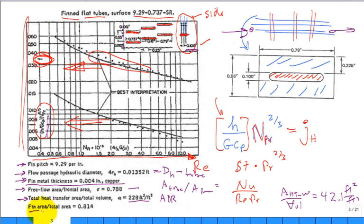The fin area to total area ratio is 81.4% — meaning 81.4% of the air-side surface is fin area and the remainder is bare tube area. There's a lot of information on these plots. We'll need fin efficiency for the overall surface effectiveness calculation.